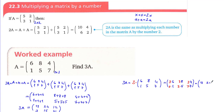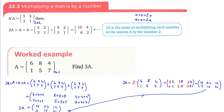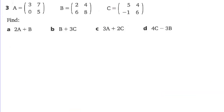3 times 6 is 18, 3 times 8 is 24, 3 times 4 is 12, 3 times 1 is 3, 3 times 5 is 15, and 3 times 7 is 21. As you can see, this answer and the addition method answer are equal, which means you can multiply a matrix by a scalar by multiplying all entries by that scalar.